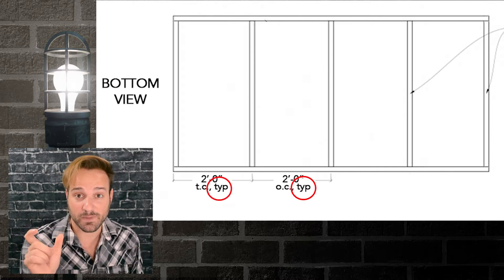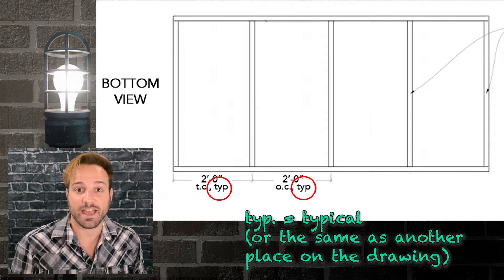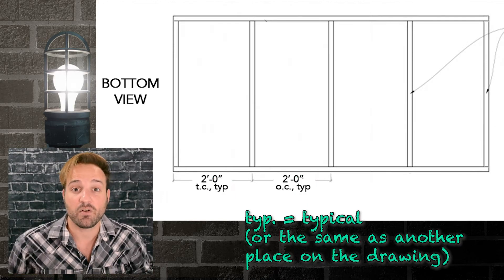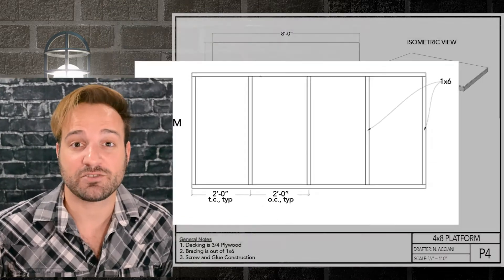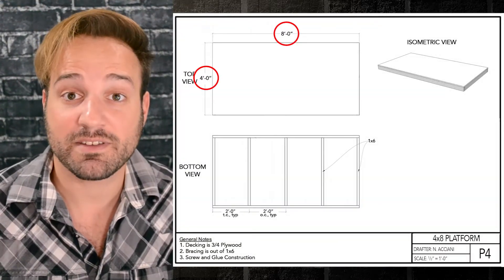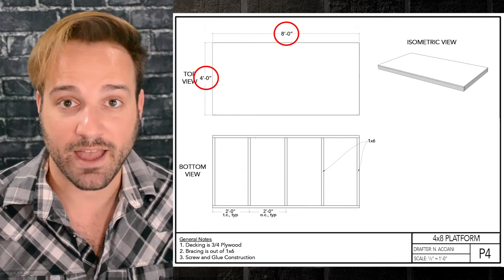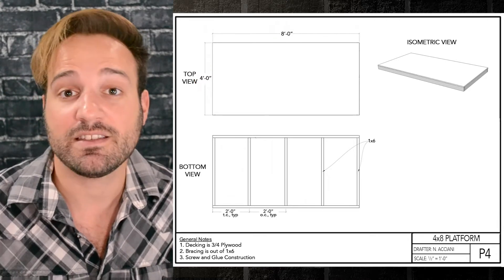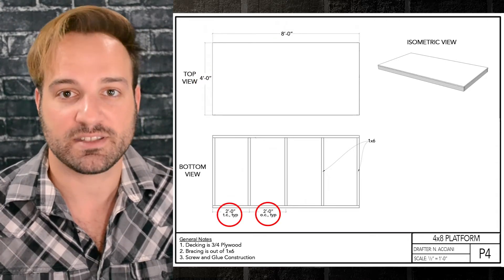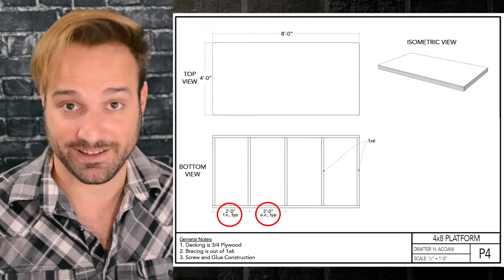And if it says TYP there, that means typical. That means everything that's drafted like that is going to be that measurement. That's so they don't clog up this drafting and make it confusing. So, we have our overall dimensions, which give us the capability to cut down and get all the pieces that we need. And then we have these internal dimensions that tell us how to assemble it, just like following IKEA instructions.